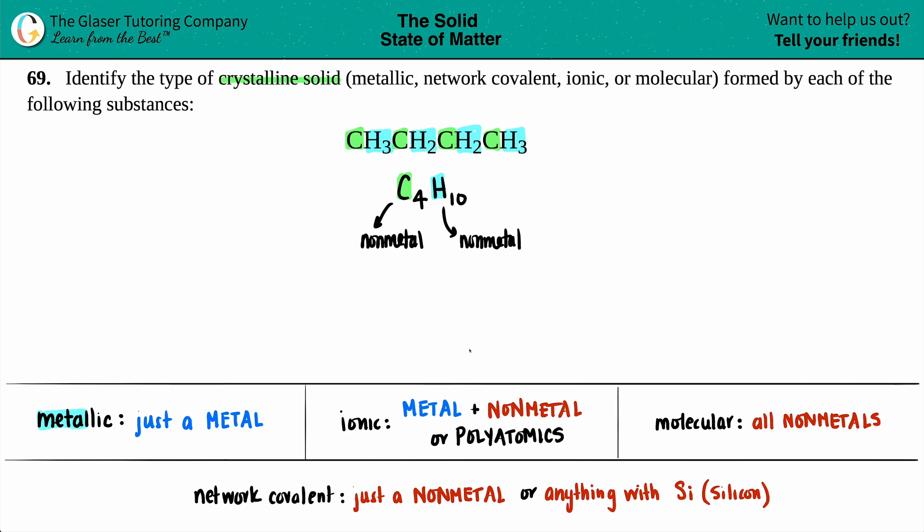But let's just make sure that it's not a network covalent. Network covalent just means that you will see a single nonmetal, not a group of them. So whether you might have seen it as just a carbon, that would be a network covalent crystalline solid.